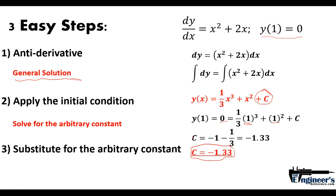The third step is to substitute the arbitrary constant into our general solution. That brings us to this particular solution. It's no longer the family of solutions - now it's a particular solution that satisfies this differential equation: y(x) = (1/3)x³ + x² - 1.33. That is our particular solution.